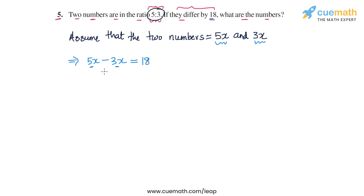And this gives us an equation in x that we can solve to find the value of x. So 5x minus 3x is equal to 2x. So we get 2x is equal to 18. And now we have this 2 on the LHS which we have to get rid of.